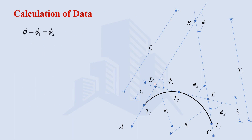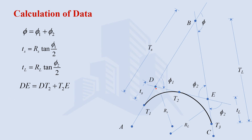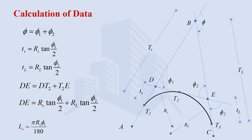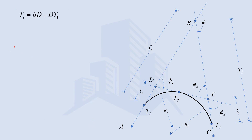For calculations: phi equals phi 1 plus phi 2. TS, because this is a simple circular curve, uses the same formula as simple circular curve — RS times tan(phi1/2) for the shorter side, using radius of shorter side and deflection angle phi 1. Similarly for the long curve using RL and phi 2. The common tangent length equals TS plus TL. For the length of the short curve, radius of short curve and phi 1 are used; for the length of the long curve, radius of long curve and phi 2 are used.